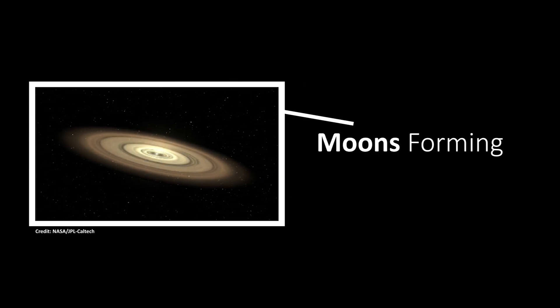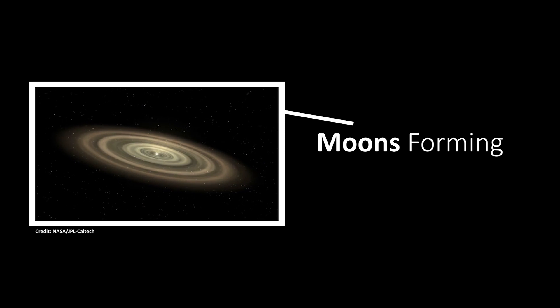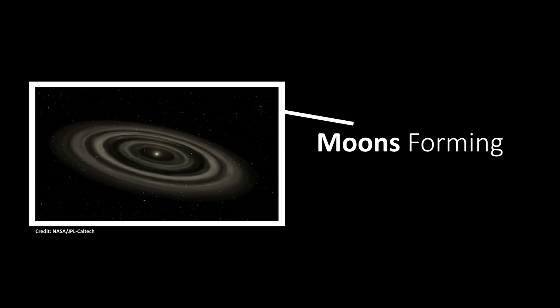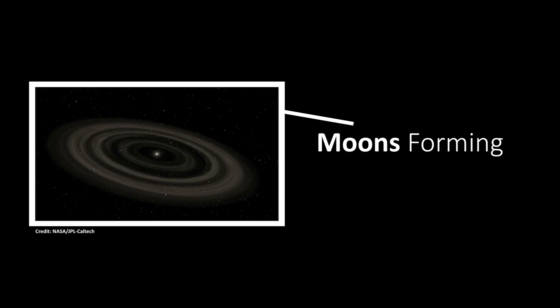Astronomers expect that the rings will become thinner in the next several million years and eventually disappear as moons form from the material in the disks.